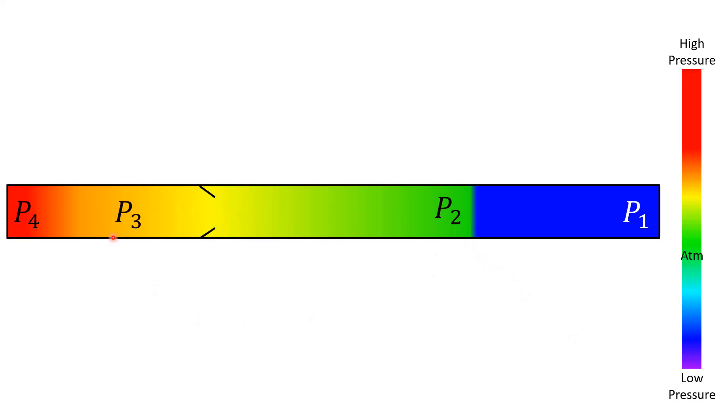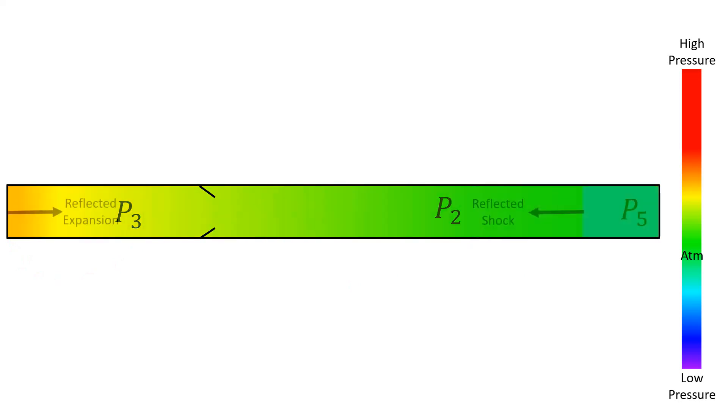On the other side, the expanding gas decreases to a P3, and we end up with the initial low pressure, the shocked gas pressure, the expanding gas pressure, and the original high-pressure driver gas. As that shockwave hits the end wall and reflects off, it leaves a high-pressure P5 here in the test section, and we define that as our test condition.